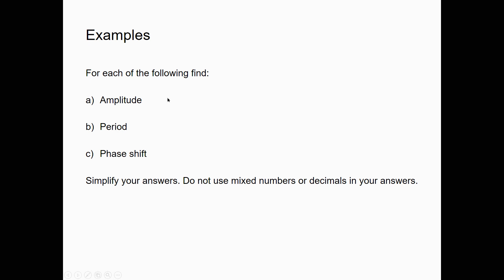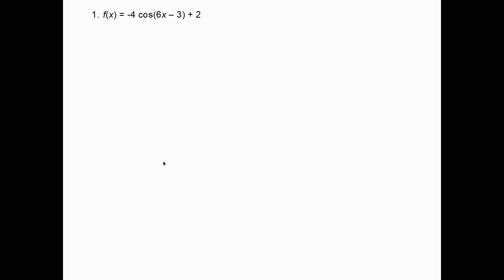For each function, we find: (a) amplitude = |A|, (b) period = 2π/|B|, (c) phase shift = -C/B. Example 1: f(x) = -4·cos(6x - 3) + 2. Amplitude = |-4| = 4. Period = 2π/6 = π/3. Phase shift = -(-3)/6 = 3/6 = 1/2. So the basic period begins at x = 1/2 and ends at x = 1/2 + π/3.